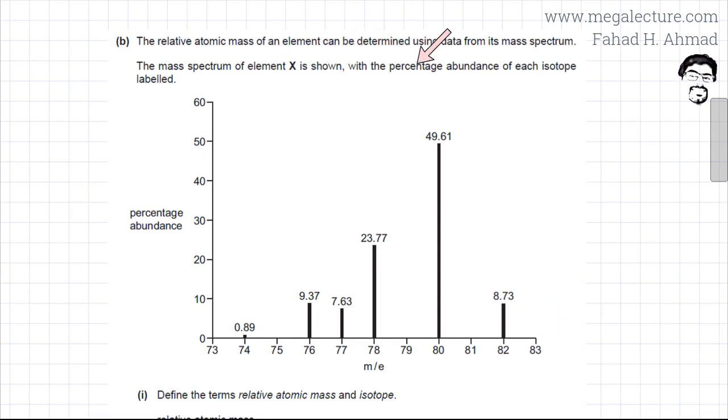The mass spectrum of element X is shown with the percentage abundance of each isotope labeled. So these are the different isotopes. There's an isotope having a mass of 74 and the percentage abundance is 0.89%. Then there's another isotope having a mass of 76 and the percentage abundance is 9.37%.